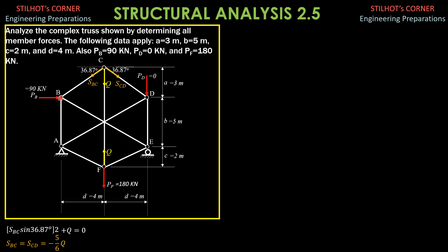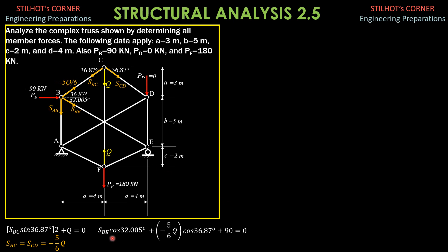We then move to joint B. This angle is also 36.87 degrees, and the angle here is arctan of 5 over 8, so 32.005 degrees. These are the designations for the forces and stresses. Summation of forces X equals 0: SBE cosine 32.005 degrees, plus negative 5/6 of Q, cosine of 36.87 degrees, plus 90 equals 0. Expressing SBE in terms of Q and the constant: SBE equals 0.7861Q minus 106.13.